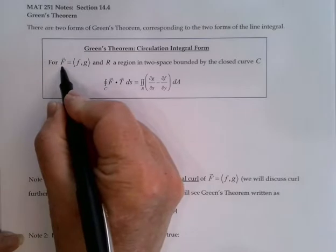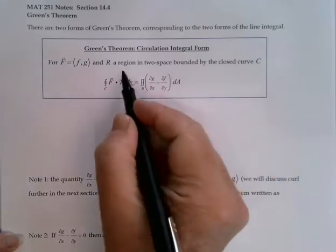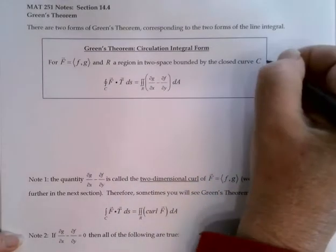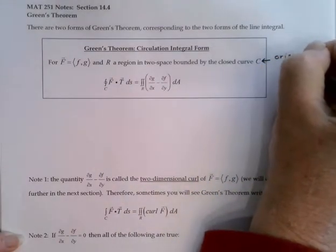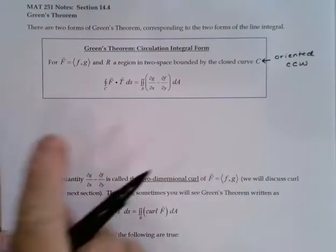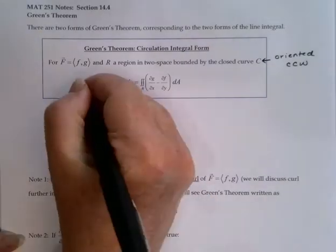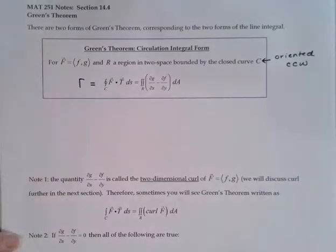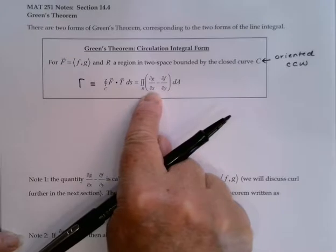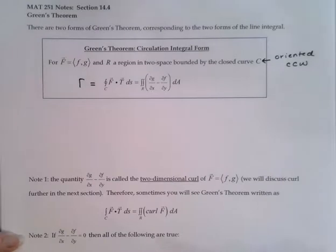If I've got a vector field f equals <f,g>, and this is a two-dimensional vector field, and r is a region in two-space bounded by the closed curve c, oriented counterclockwise, then the integral over the curve c of f dot t ds, which we know as our circulation integral, is equal to the double integral over r of the partial of g with respect to x minus the partial of f with respect to y, dA.